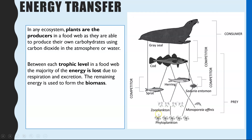Between each trophic level — that is the name for each stage in a food chain — a lot of energy is lost, and again that is something you covered at GCSE. That energy can be lost due to respiration, so energy is lost as heat energy in respiration.